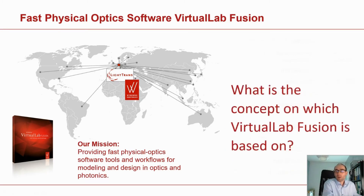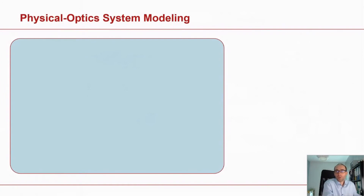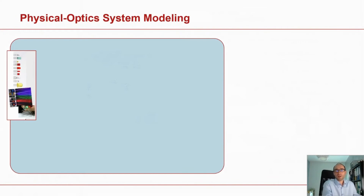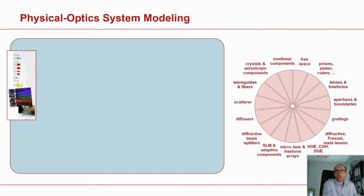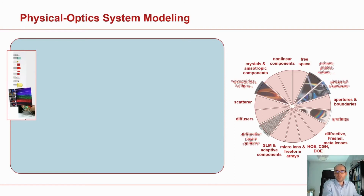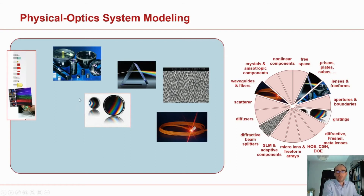Let's have a brief look at the concept VirtualLab Fusion is based on. We are doing physical optics — but what does that mean? What's the difference to ray tracing? In general, an optical system starts with some kind of source, and nowadays there are very complex types of sources like LEDs, laser scanners, laser diodes, VCSEL arrays, and so on. The physical optics approach allows us to model these sources very accurately. The optical system can consist of very different components — lenses, gratings, diffusers, waveguides, and so on.